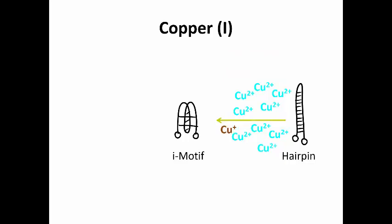Adding the ascorbate reduces the copper 2 into copper 1. We only need to add a very small amount because you need much less copper 1 than copper 2 to see effect. Then we can see the change in DNA from a hairpin structure into an i-motif.